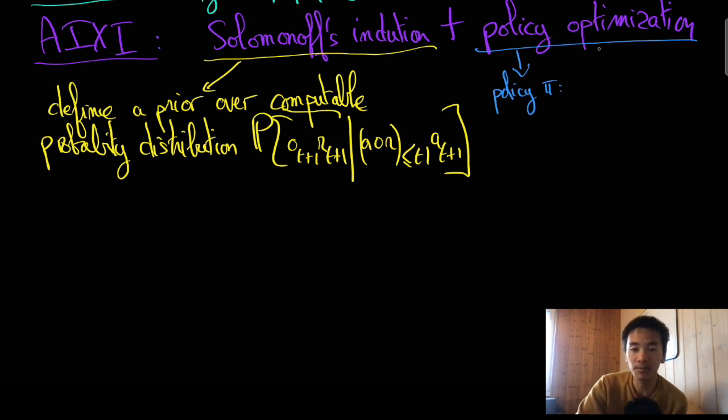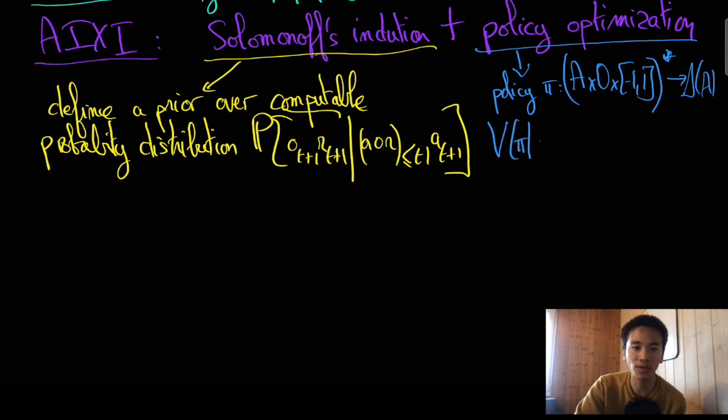And formally, it's simply a function that maps past actions, observations, and rewards to a new action which may be randomized. Now, given a posterior distribution computed through Solomonoff's induction, AIXI can compute the expected rewards it will receive if it adopts a certain policy pi.